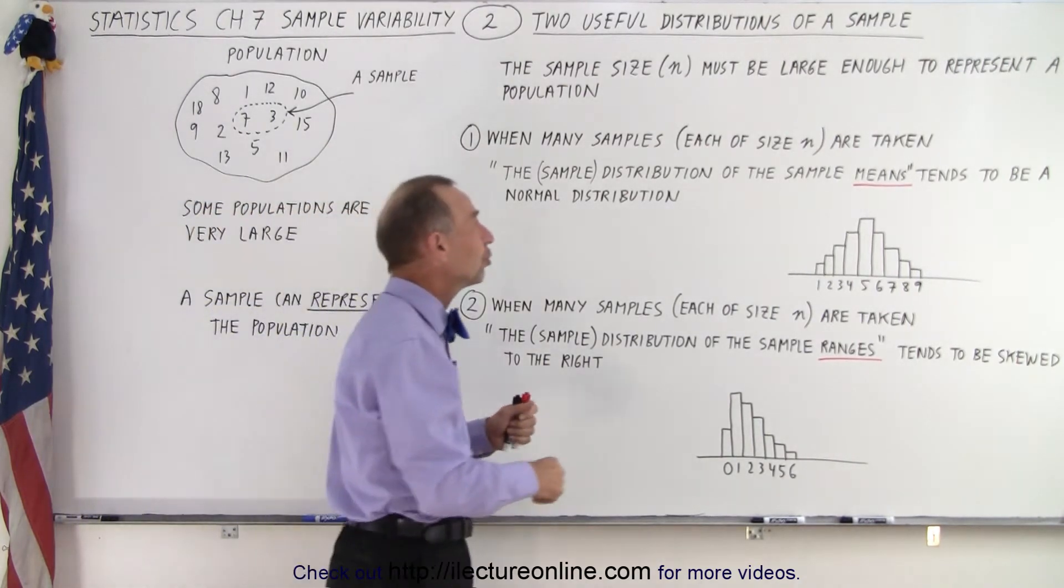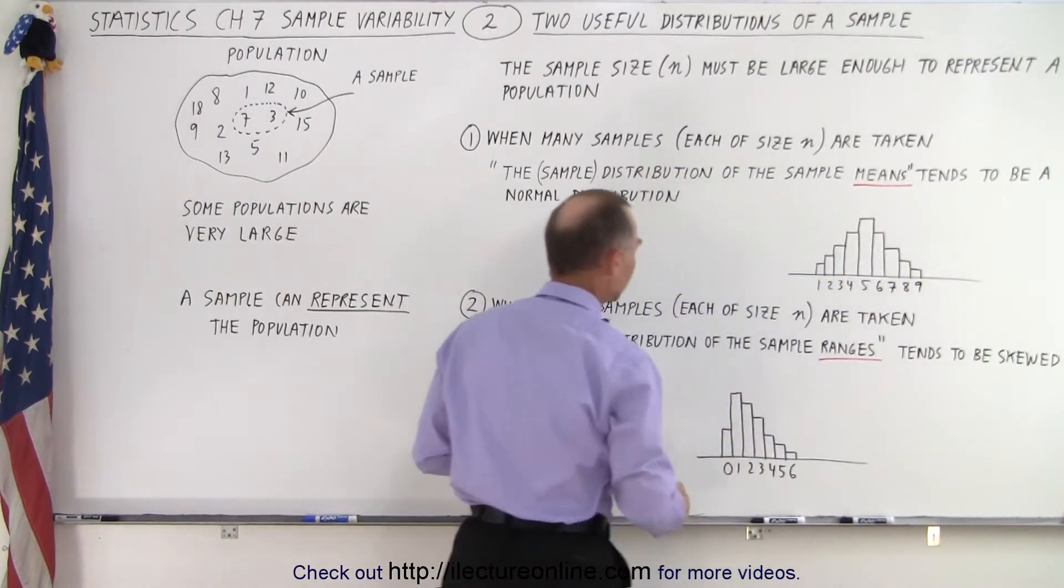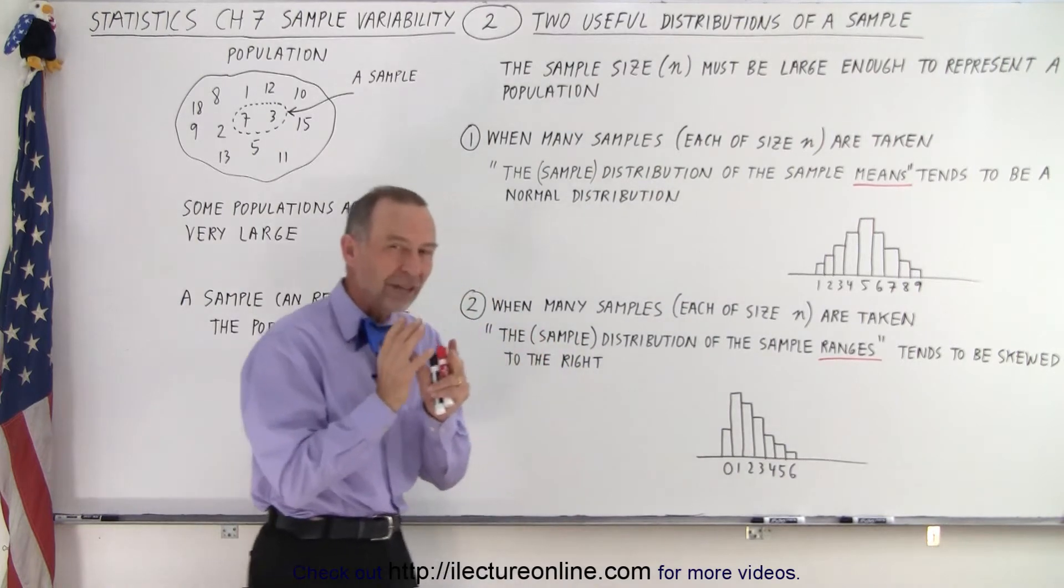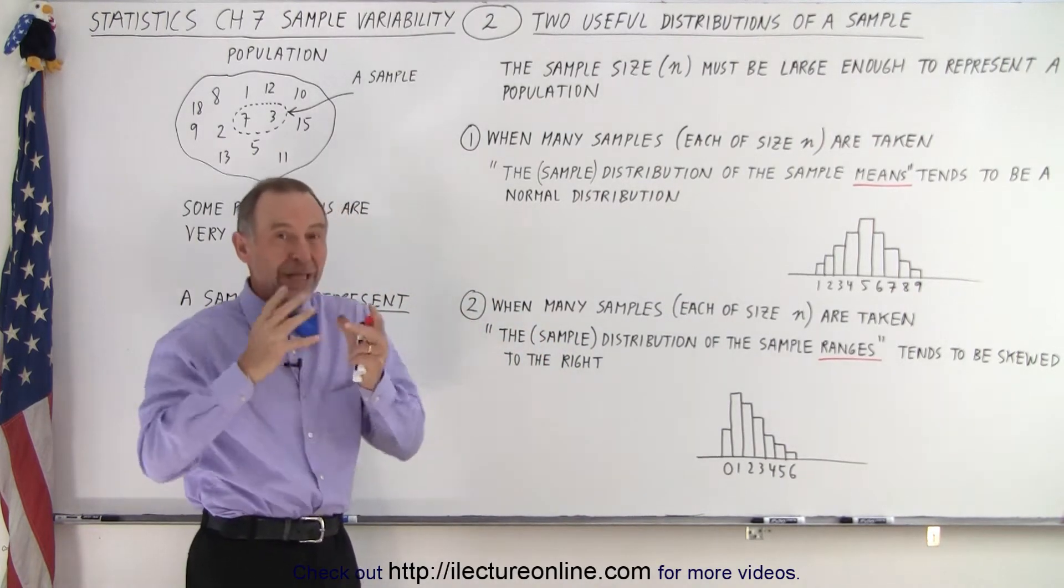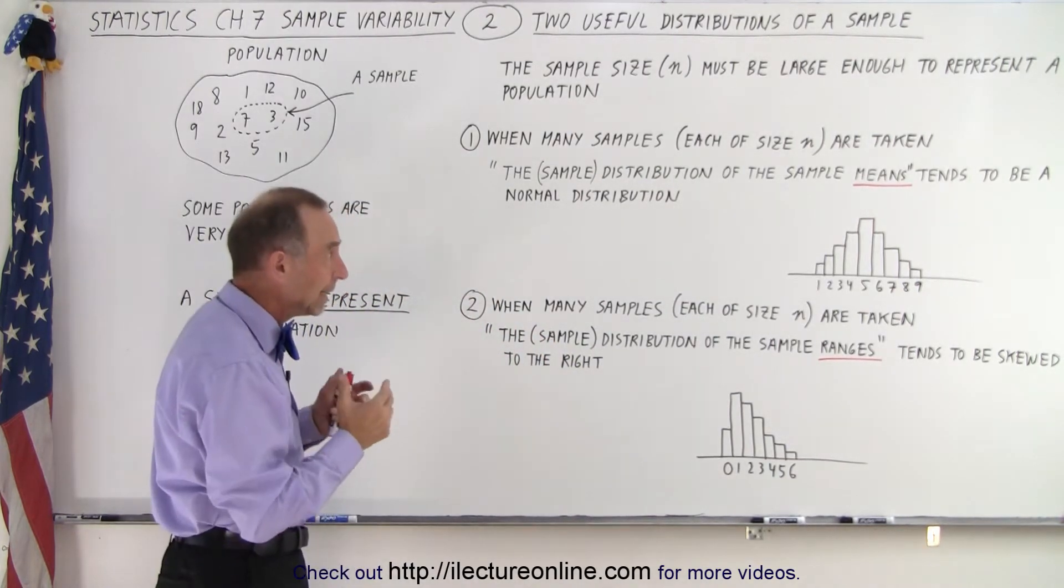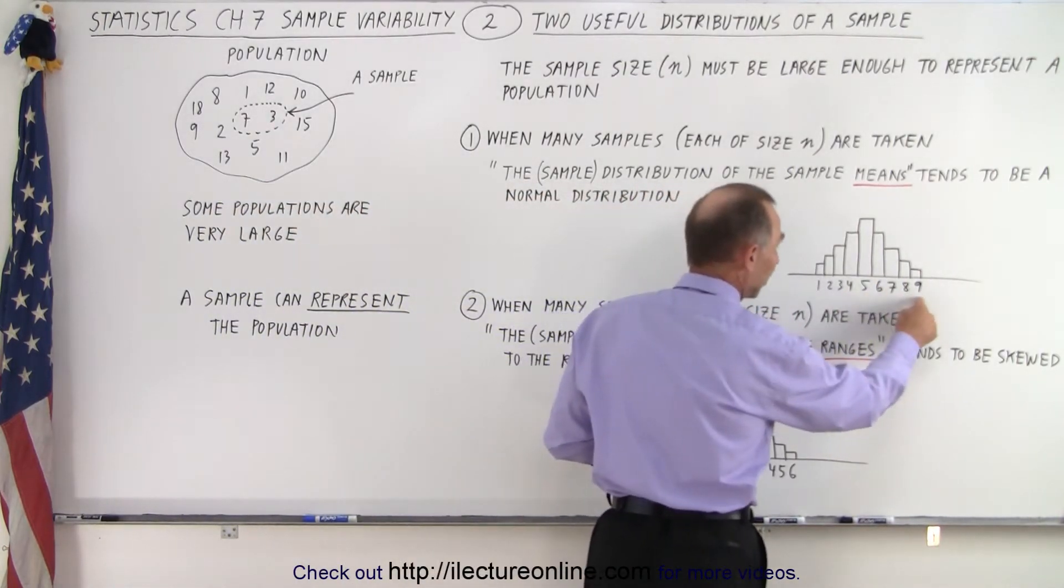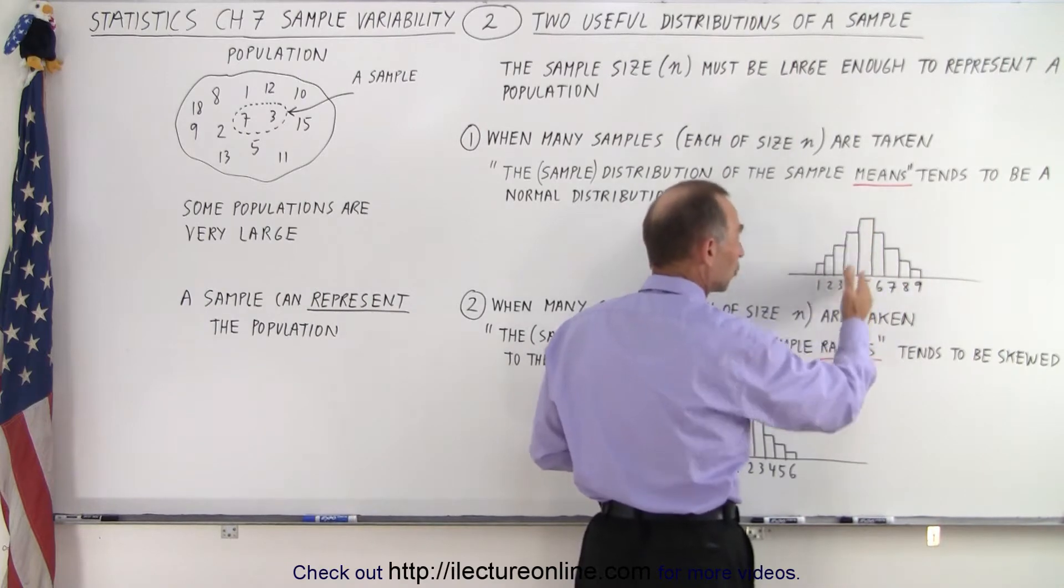One distribution is the sample means. The other distribution is the sample ranges. So each of the samples will have its own mean, its own average. And then what we do is we grab all those averages. Some will have a small average, some will have a large average, the majority will have somewhere in between.